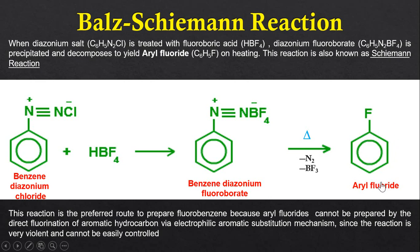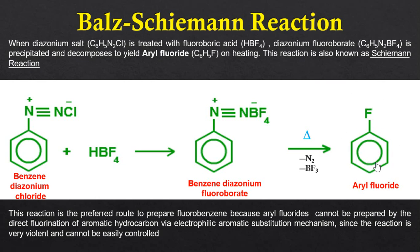This reaction is the preferred route to prepare fluorobenzene because aryl fluorides cannot be prepared by the direct fluorination of aromatic hydrocarbons via electrophilic aromatic substitution. The direct fluorination reaction is very violent and cannot be easily controlled, so the Balz-Schiemann reaction is the only reliable method to prepare fluorobenzene.